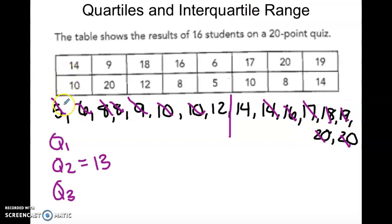And I'm going to find Q1 next. Again, two middle numbers, so I find the average of them. So Q1 is 8.5.